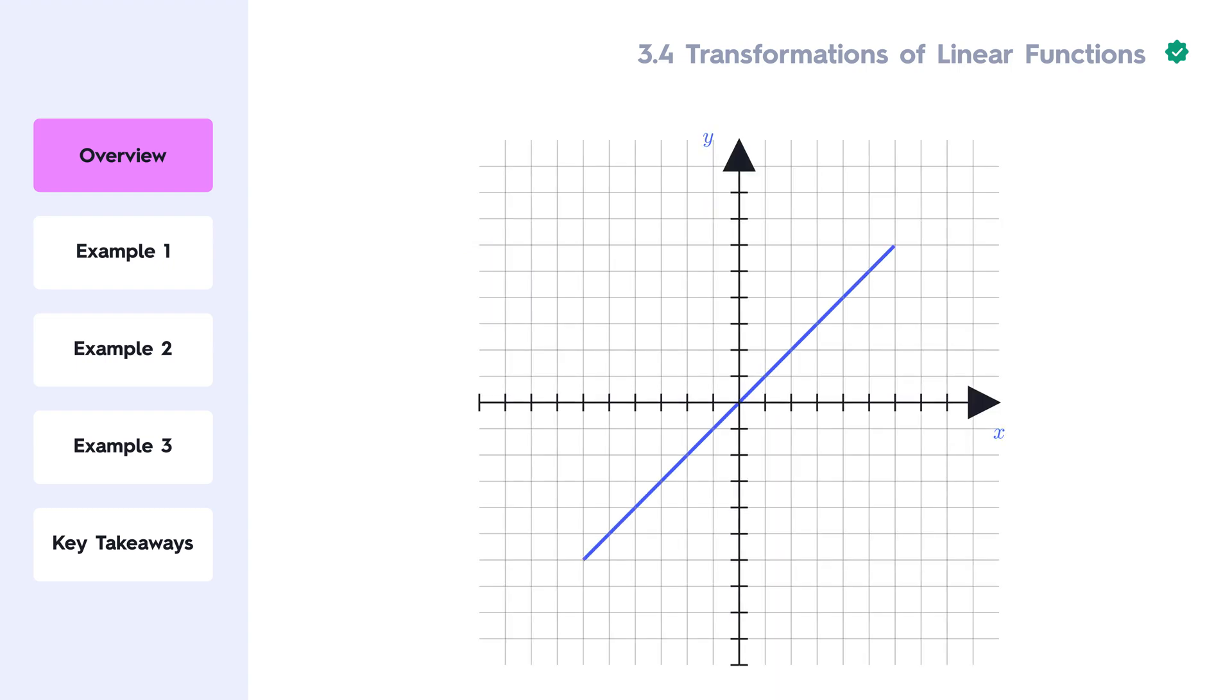Let's break down the different types of transformations that can happen to a linear function. Vertical shift: If we add or subtract a constant k to the function, y equals f of x plus k, the graph shifts up or down by k.